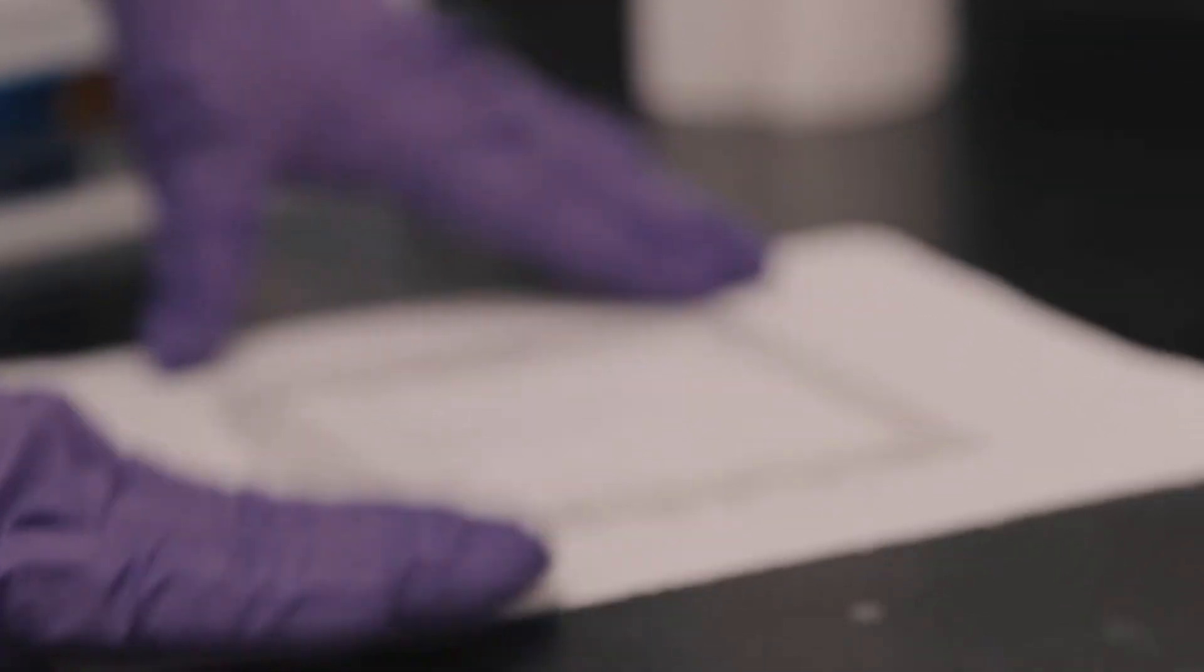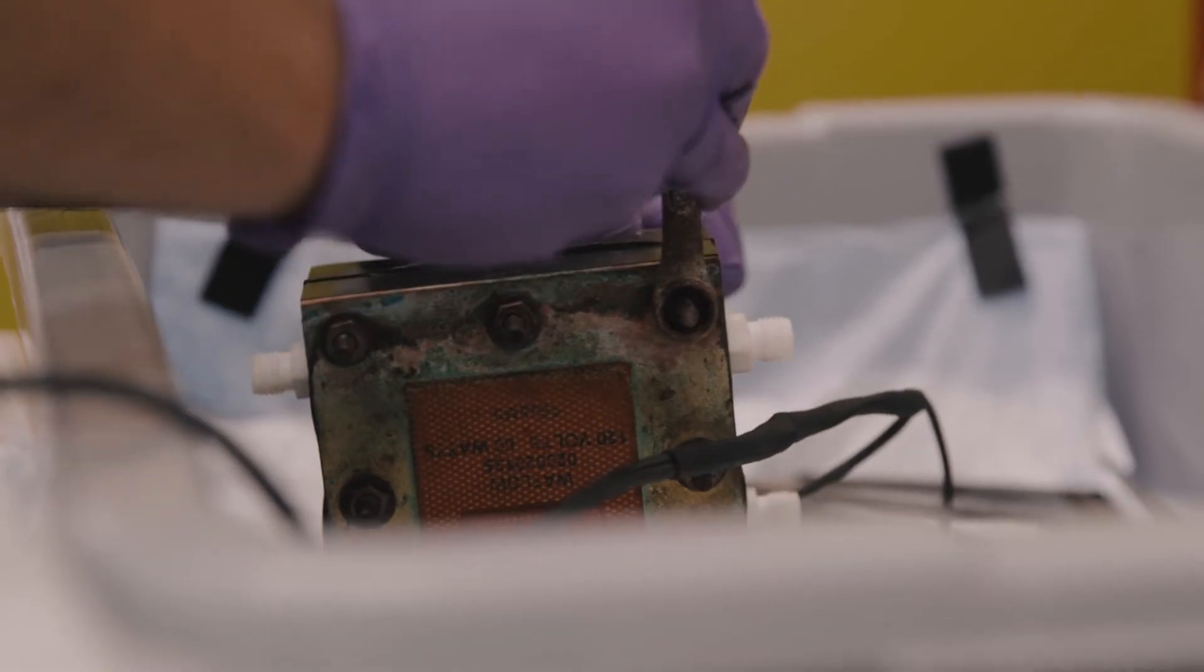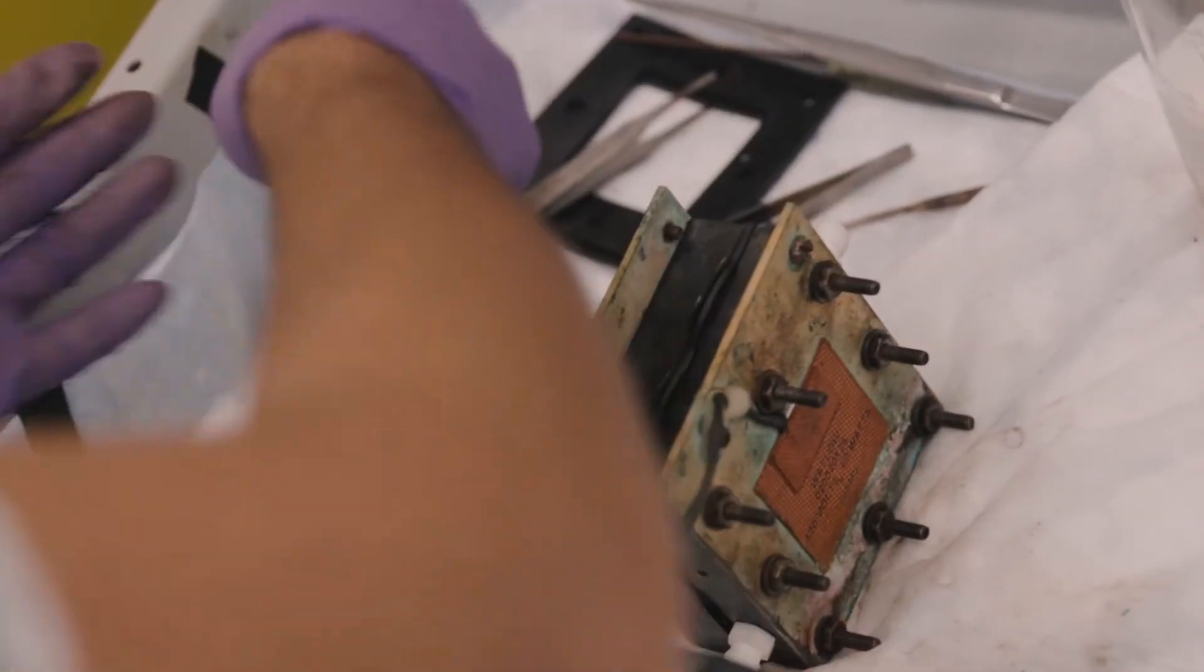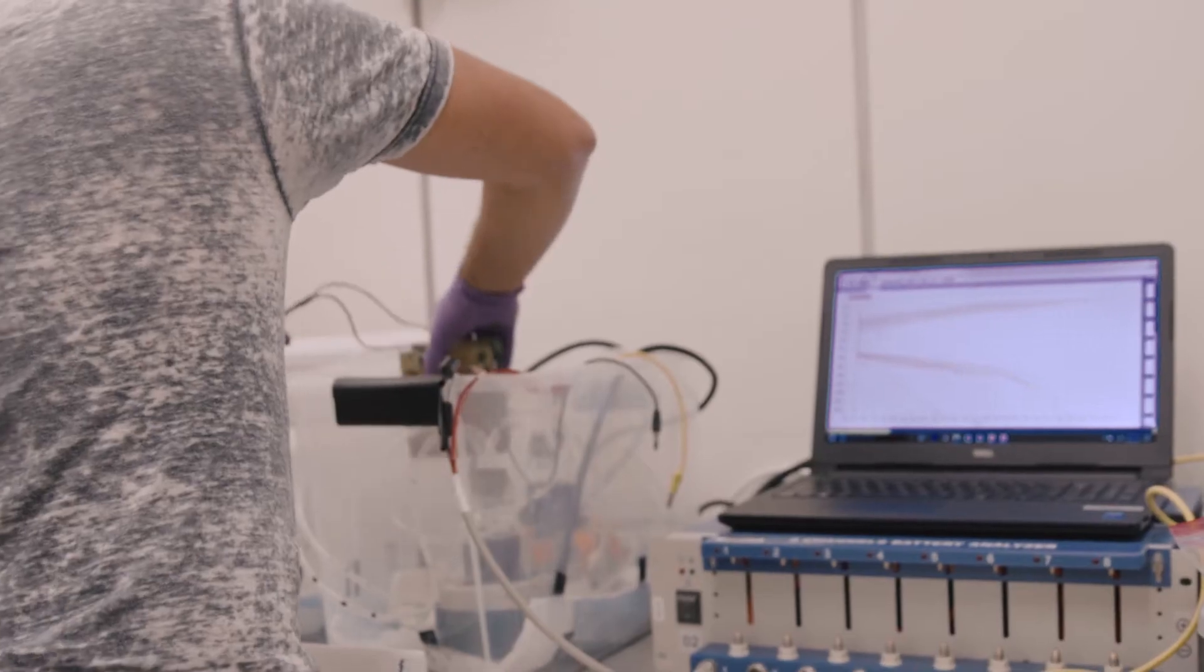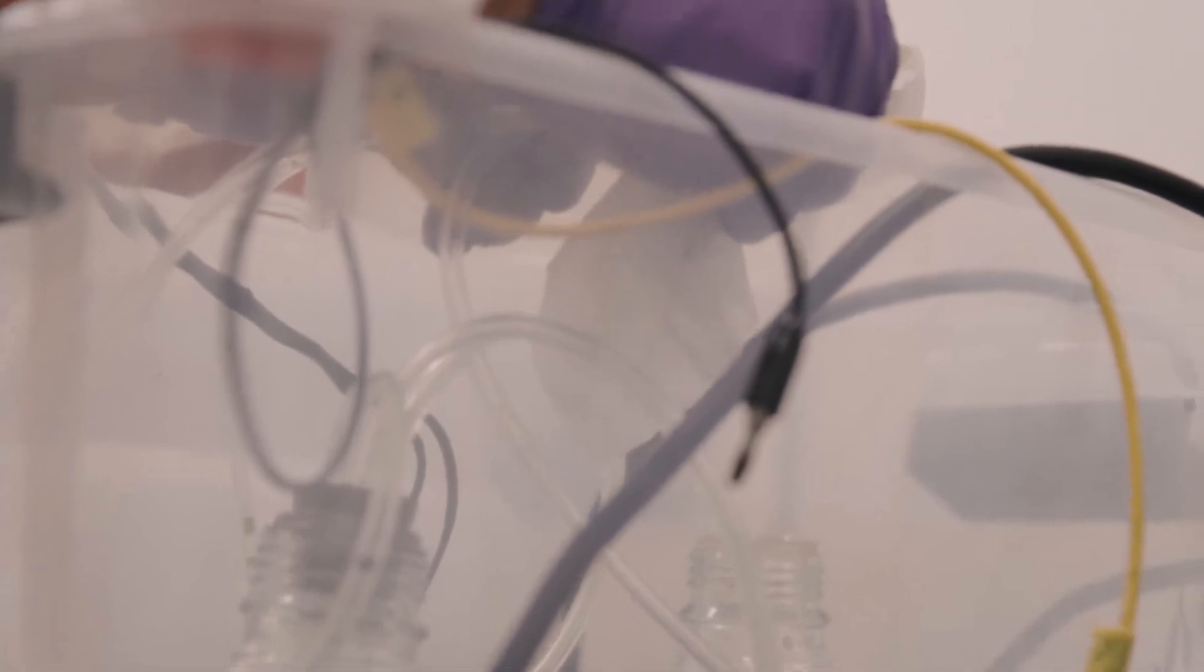Where we're starting is in this test case of redox flow batteries, which is a renewable energy storage battery. They're really designed not to replace cell phone or car batteries, but really to operate within this renewable energy ecosystem.